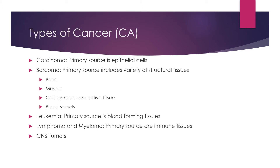The American Cancer Society divides different types of cancers into five types. Carcinoma comes from the epithelial cells. Sarcoma can include bone, muscle, collagenous tissue, and blood vessels. Leukemia, where the primary source is blood-forming tissues. Lymphoma or myeloma, where the primary source is immune tissues. And central nervous system tumors.